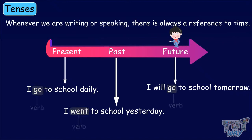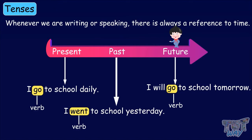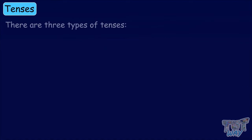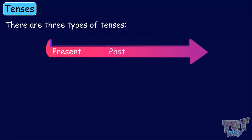It is the verbs in a sentence that show the time and decide the tense of a sentence. There are three types of tenses: present, past and future. These tenses are further divided into more tenses according to their relations with time.